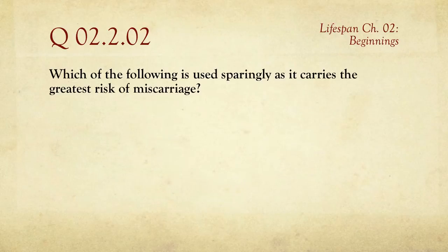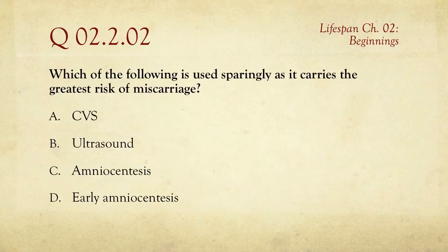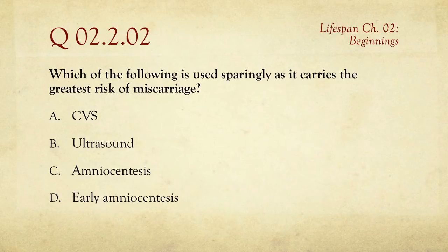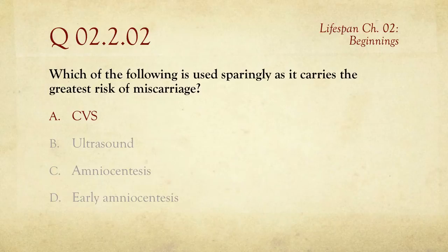Number two: which of the following is used sparingly, as it carries the greatest risk of miscarriage? The choices are CVS — chorionic villus sampling — B, ultrasound; C, amniocentesis; and D, early amniocentesis. These are four different ways of checking on an embryo or fetus to see that it's healthy or to check for particular problems. The one that carries the greatest risk of miscarriage is CVS, because it's done earliest and involves getting a piece of tissue rather than just a sample of amniotic fluid. It's most often associated with checking for Down syndrome, though it can be used to check for a couple hundred other disorders.